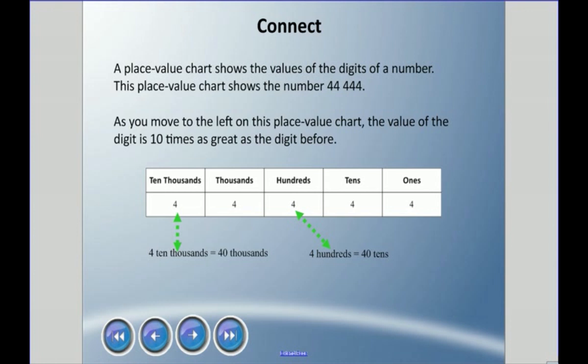Now we can look at this another way in terms of place value. A place value chart shows the values of the digits of a number. This place value chart shows the number 44,444. As you move to the left on the place value chart, the value of the digit is 10 times as great as the digit before. For example, this 4 is in the tens place, which is 10 times greater than the ones place. This 4 is 400, which is 10 times greater than 40. This 4 represents 40,000, and this one represents 400.